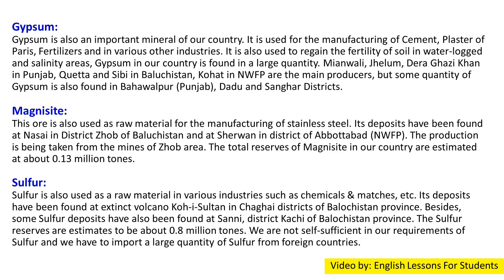Mianwali, Jhelum, and Dera Ghazi Khan in Punjab; Quetta and Hub in Balochistan; and Kohat in NWFP are the main producers. Some quantity of gypsum is also found in Bahawalpur, Punjab, Dadu, and Sanghar districts in Sindh, and Dera Ismail Khan in NWFP. The total reserves of gypsum in our country are estimated at about 350 million tons.